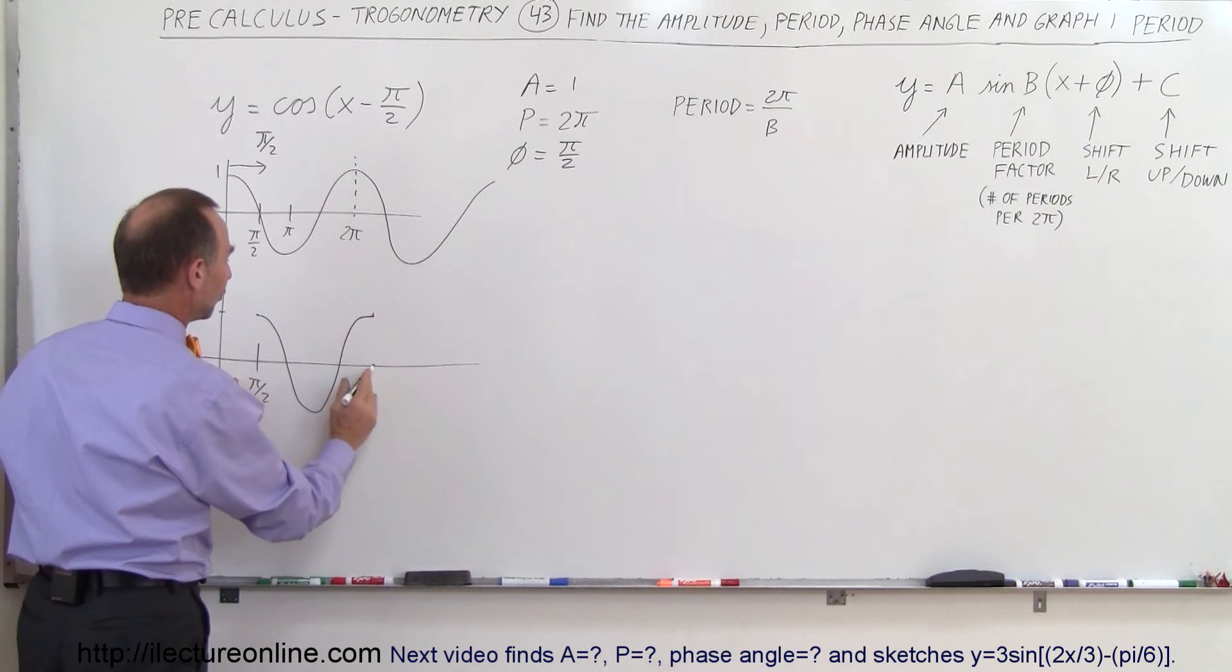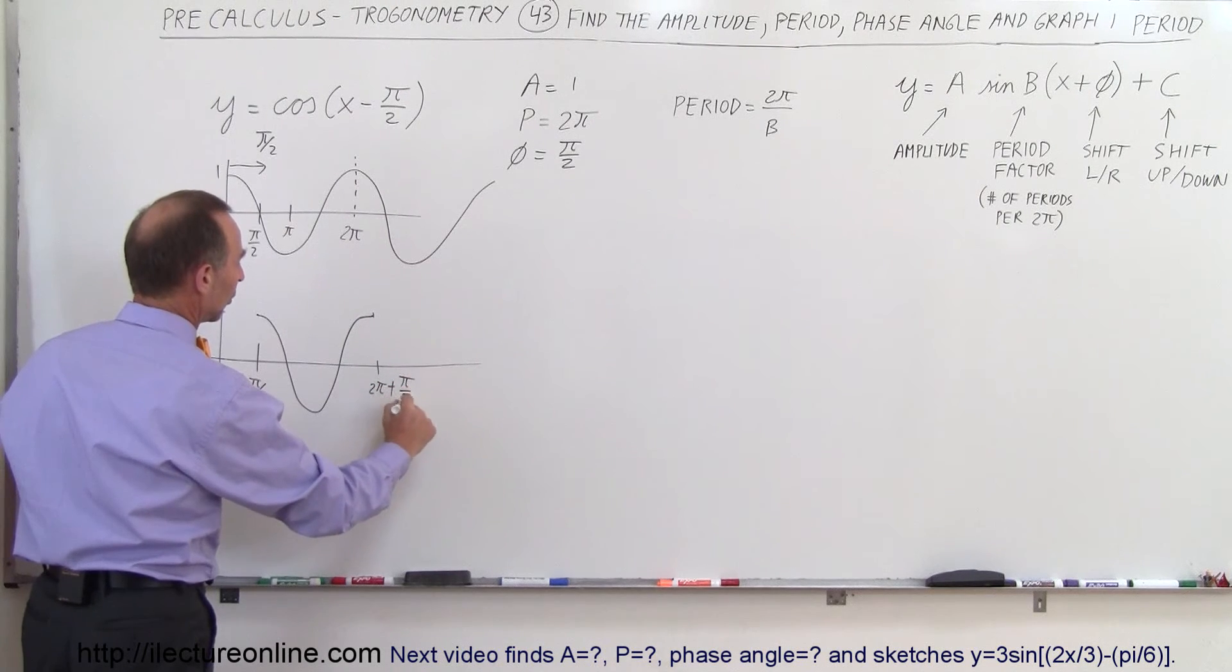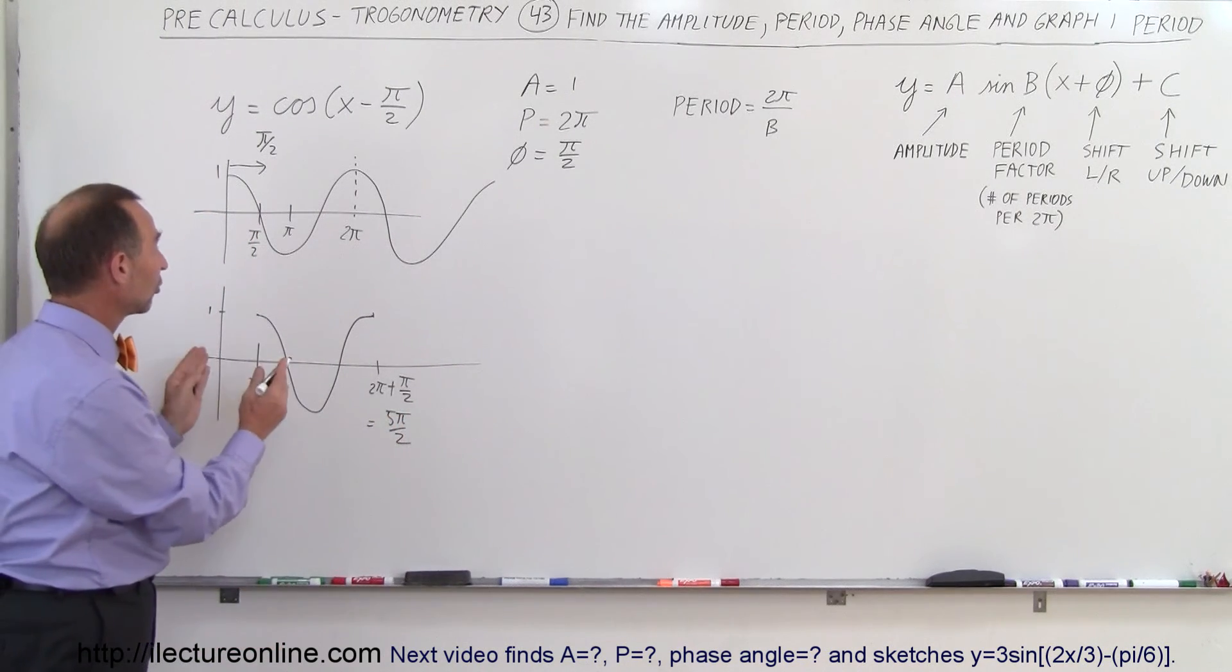You go from π/2, add 2π to that. So this is 2π plus π/2, which equals 5π/2. That's 2.5π. And that's what the function looks like.